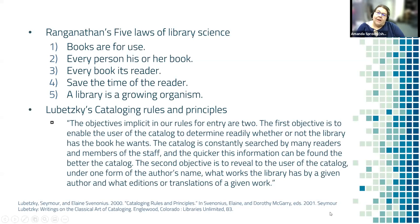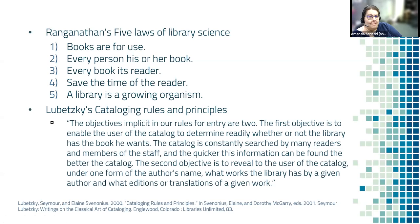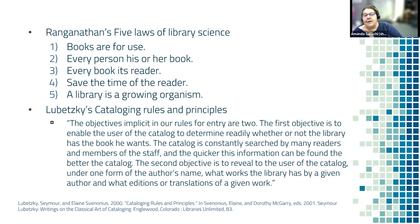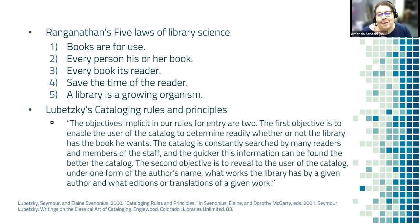Ranganathan was a wonderful Indian librarian, actually trained as a mathematician and extremely logical — his writing is quite delightful. He came up with these five laws of library science, which I love because they're simple and easy to remember: books are for use; every person, his or her book; every book its reader; save the time of the reader; and the library is a growing organism. We all know that last one because we all have stuff coming out of our ears and a hard time finding a place for all of it.